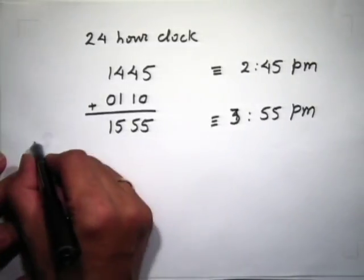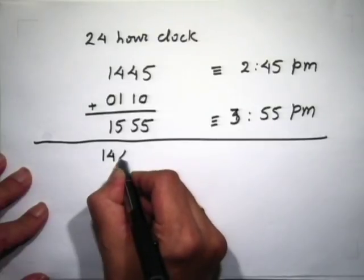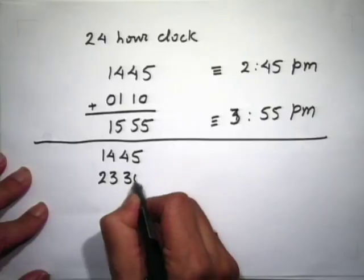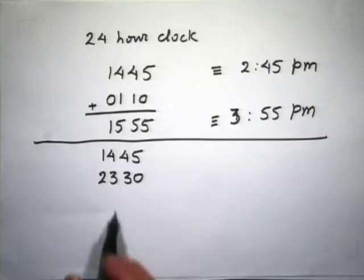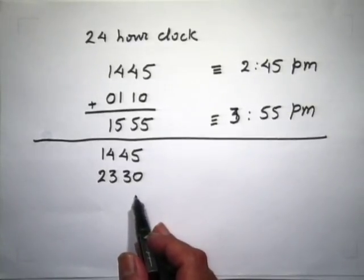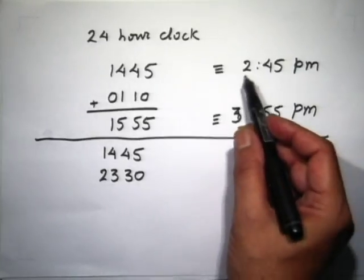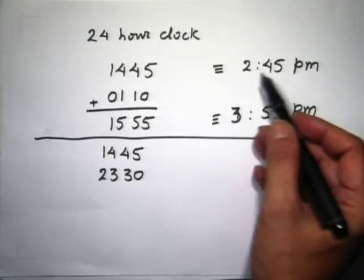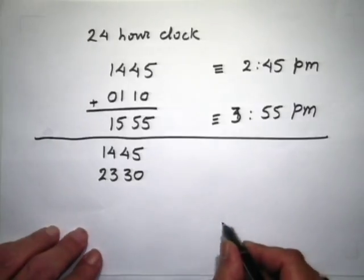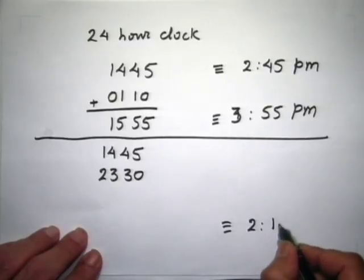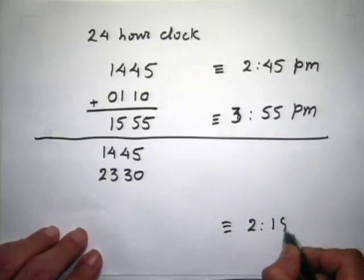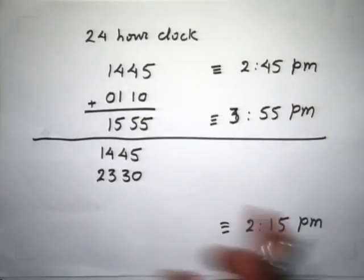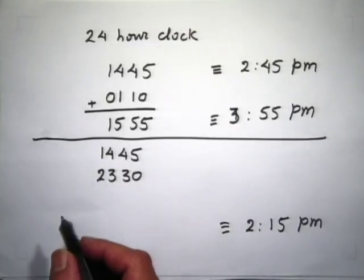Consider another example: start time 1445 (2:45 PM) with a duration of 2330, meaning 23 hours and 30 minutes. Adding 23 hours and 30 minutes to 2:45 PM puts us almost 24 hours later — so the answer should be around 2:15 PM the next day. If you simply add the numbers, you will not get the correct answer. So from the four-digit number you must first separate hours and minutes for both duration and start time.